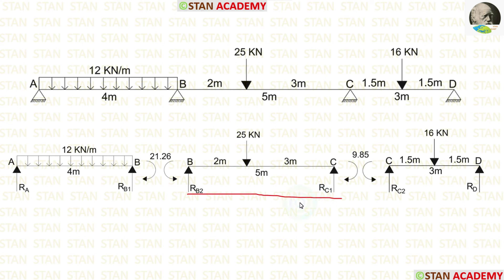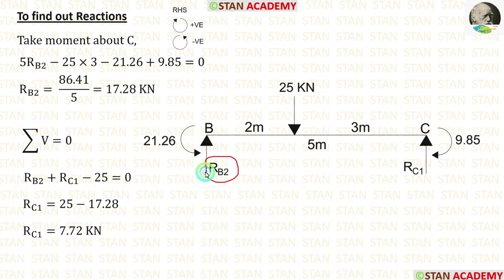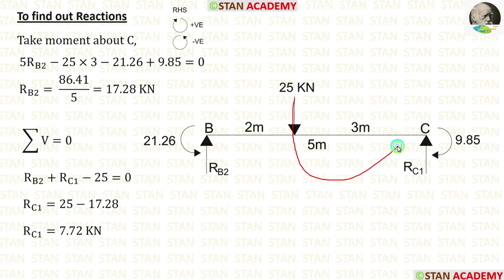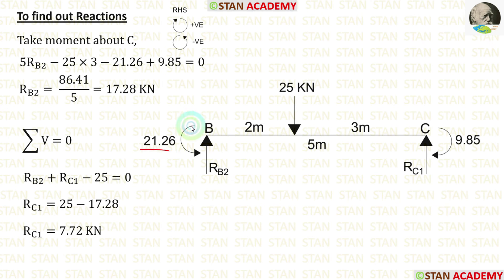Now let us take span BC and calculate the reactions. In span BC, there are two moments: MB acting in the anti-clockwise direction and MC acting in the clockwise direction. Taking moments about C, RB2 acts clockwise at 5 m, giving +5RB2. The point load 25 kN acts anti-clockwise at 3 m. Moment 21.26 acts anti-clockwise (negative) and 9.85 acts clockwise (positive). Finally, RB2 = 17.28 kN.